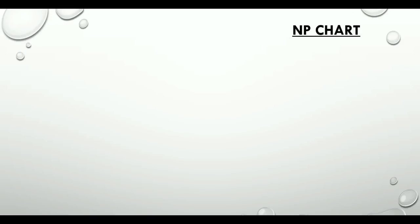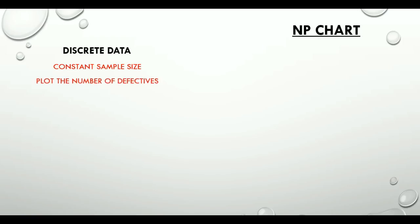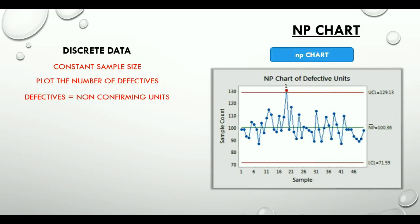Let's start with the NP chart. This chart is used when the sample size is constant and it plots the number of defectives. Defectives here means non-conforming units. Let's quickly pull up a sample NP chart. If you look at the y-axis, it shows the count of defectives.